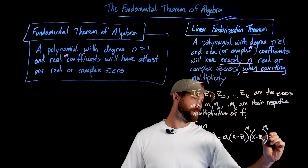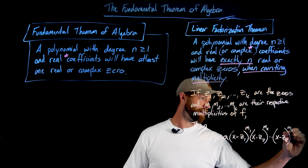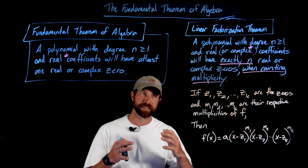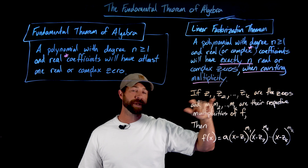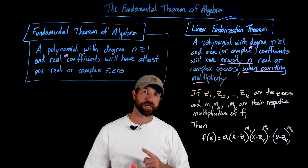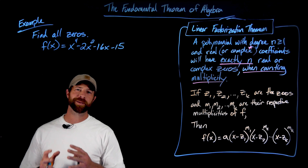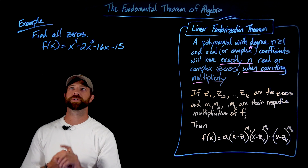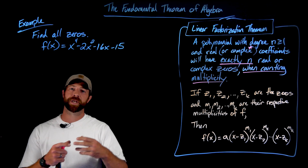If you have a polynomial with a degree of at least one and real coefficients — and I do want to note that the fundamental theorem also works for complex coefficients — then you'll have exactly n real or complex zeros. So we aren't just saying about the number of real zeros; when you allow for complex zeros, you will for sure have exactly n of those. Importantly, that's also when you're counting multiplicity — if we have a zero at x equals one of multiplicity two, we would count that as two zeros.